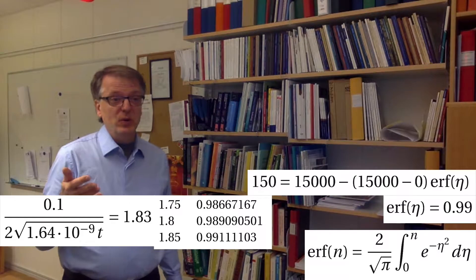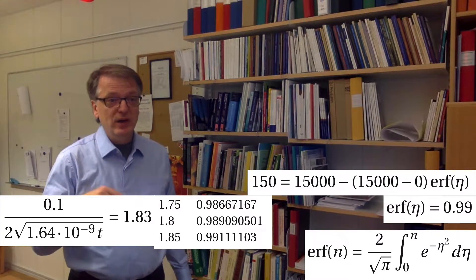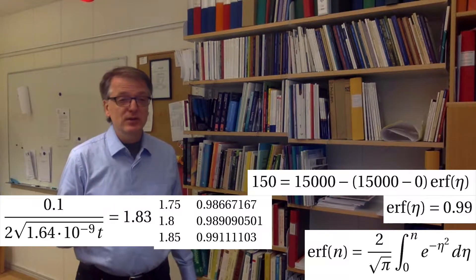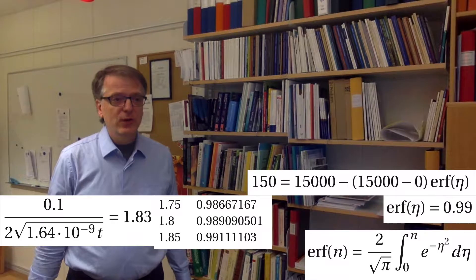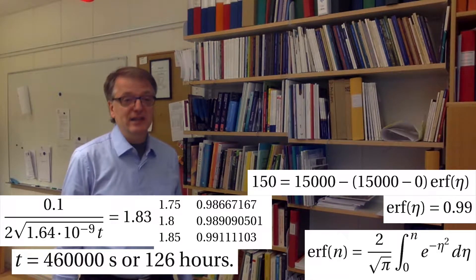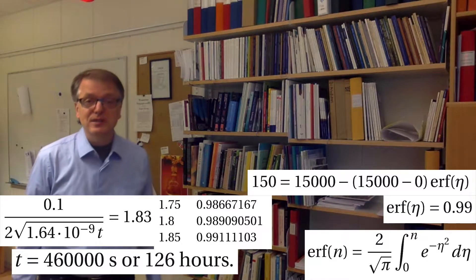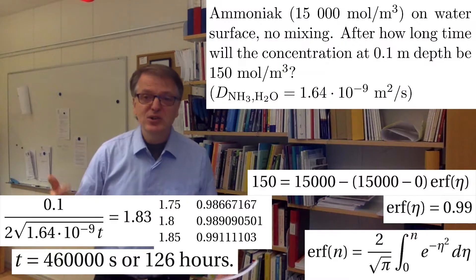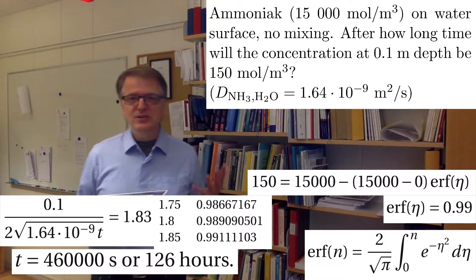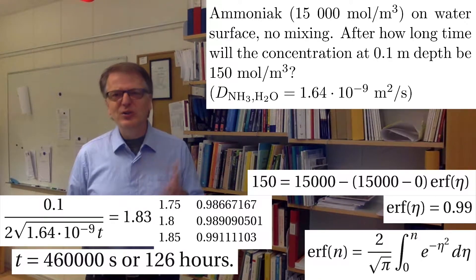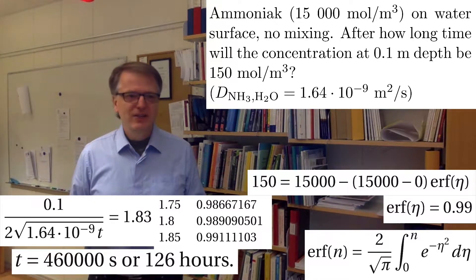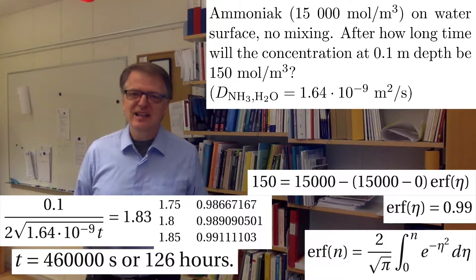So z is 0.1 meters, there are 2, you have the diffusivity as 1.64 × 10^-9, and we get 460,000 seconds or 126 hours, which is ridiculously long, right? So what this tells us is that our initial assumption that there is no mixing can't really be correct if it takes 126 hours.